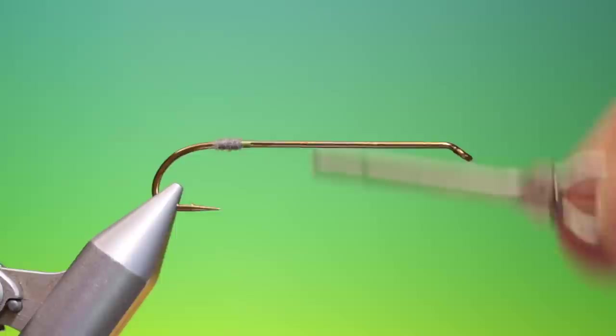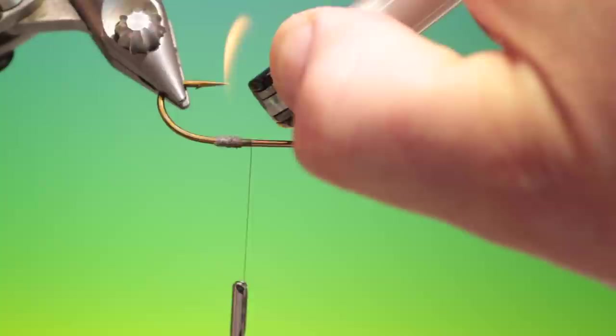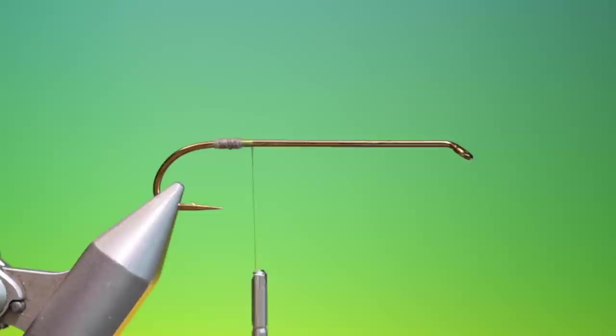So that's your classic type of dry fly dubbing. So if you want that even tighter, take a lighter and we can just burn off the fuzz and you get a super fine dry fly body.